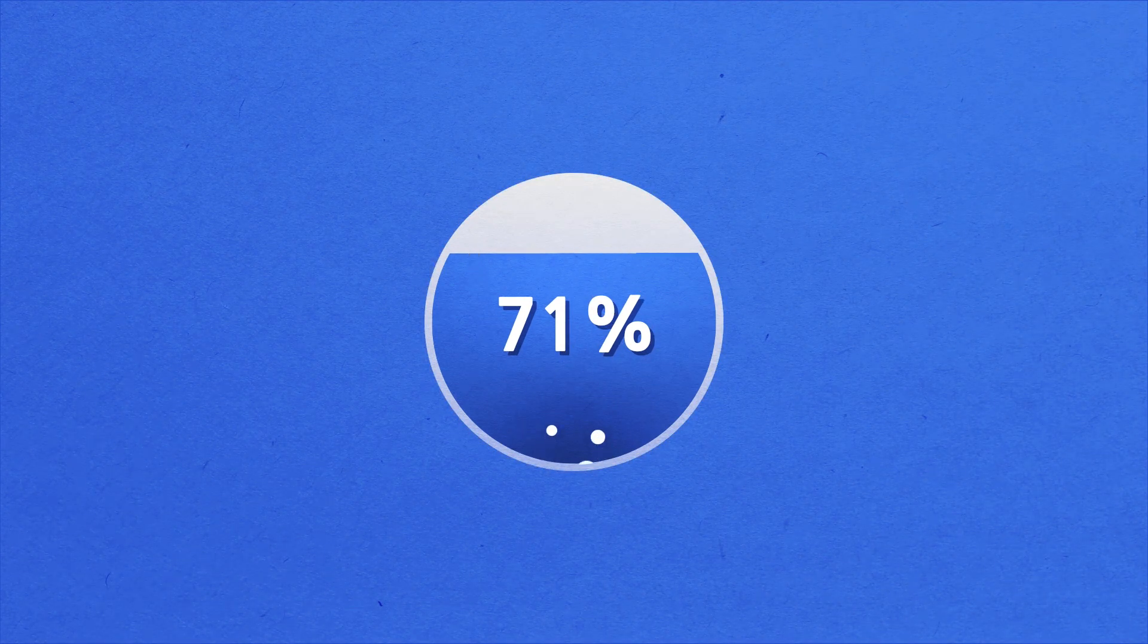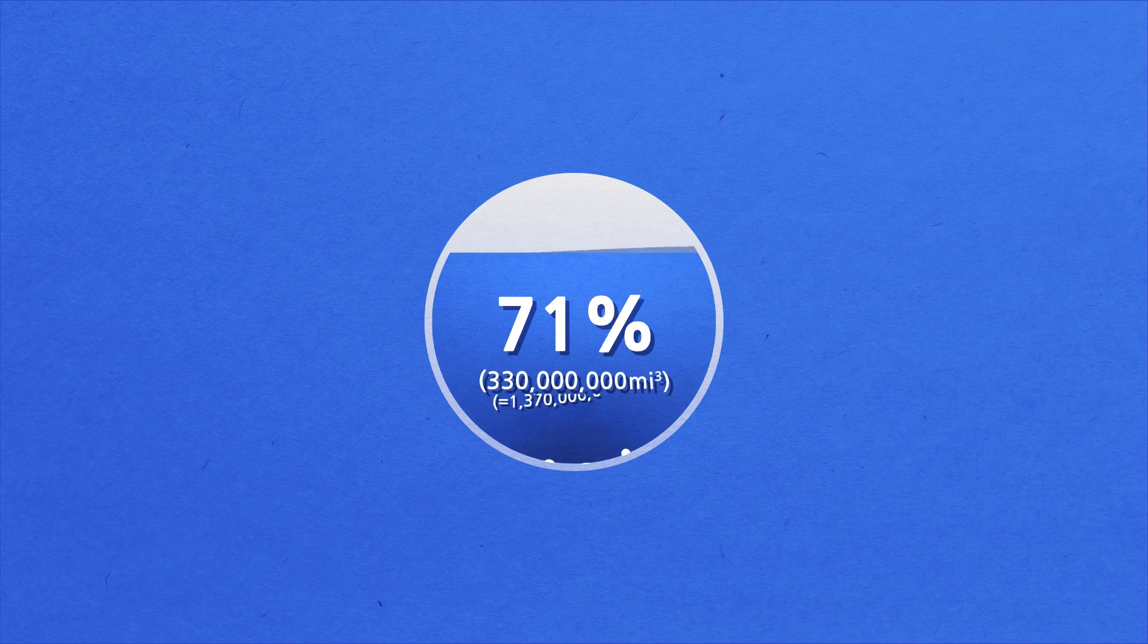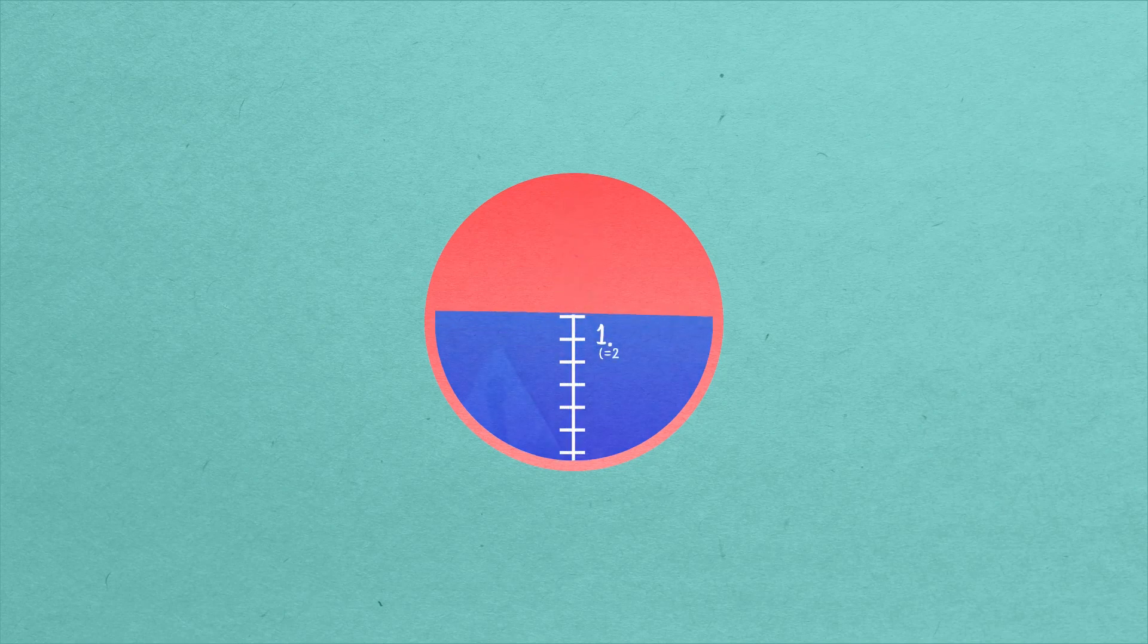The total volume of water on Earth is 330 million cubic miles. If you poured all of it onto the Earth's surface, it would cover the Earth to a depth of 1.7 miles. A lot of cities would be underwater.